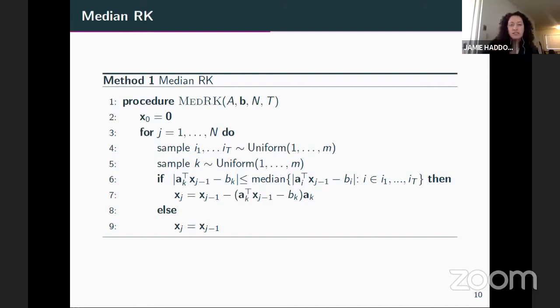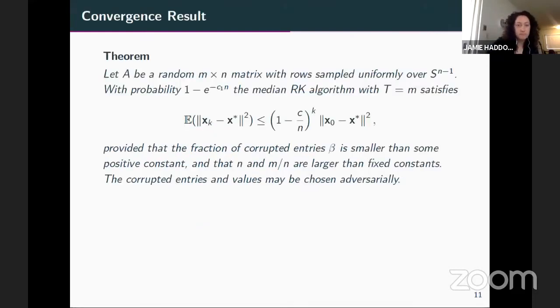So the pseudocode for the method we're proposing is given here. So generically, what this is doing is it's sampling some of the rows of your equation. Those are going to be the distances that you're going to compare to. You sample a single index, and you compare the residual or the distance associated to that single entry of the residual to the median of the entries of the residual from the sequence I1 through IT residual entries that you've also sampled. And if it happens to be lower than that median, then you're going to take that RK projection. Otherwise, you're just going to sit in place and not accept the RK projection.